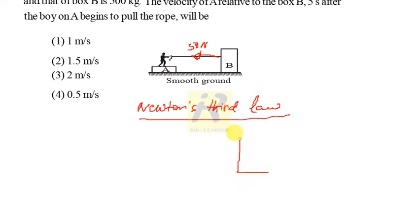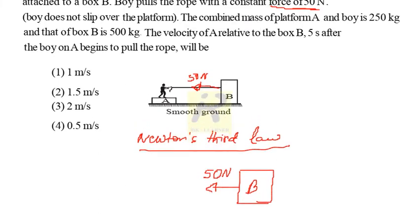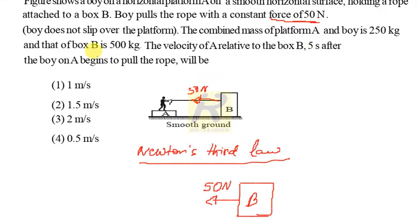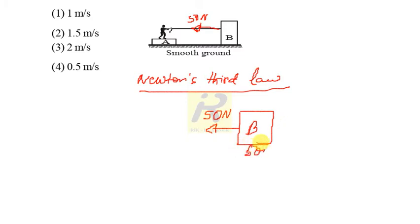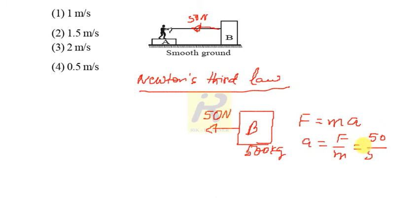Block B feels a force of 50 Newton. The mass of box B is 500 kg. Applying F = MA, the acceleration of B is A = F/M = 50/500 = 1/10 meter per second squared. This is the acceleration of B, directed towards the boy.